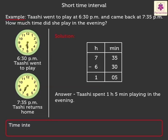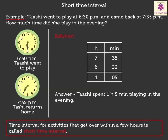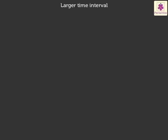Note that the Time Interval for activities that get over within a few hours is called Short Time Interval. Now, let's see how to find the larger time intervals, i.e. when an activity starts at one time of the day, i.e. a.m. or p.m., and ends at another time of the day, i.e. p.m. or a.m. respectively, within 24 hours. Let's understand it with the help of an example.